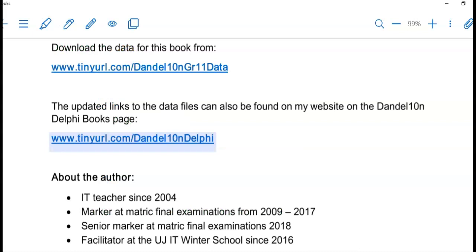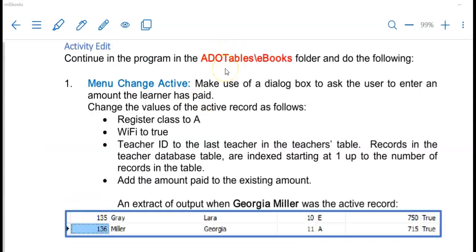This is again your time to practice so make sure that you have the Dandelion Delphi files. If you have downloaded them before, we're just going to continue in the ebooks program. Inside of the ADO tables folder you will find the ebooks folder where you can practice this activity. So try the menu change active, so we're going to make a change to the active record. And remember the wording dialog box refers to an input box in an exam. Press pause, try it yourself and I'll show you the memo.